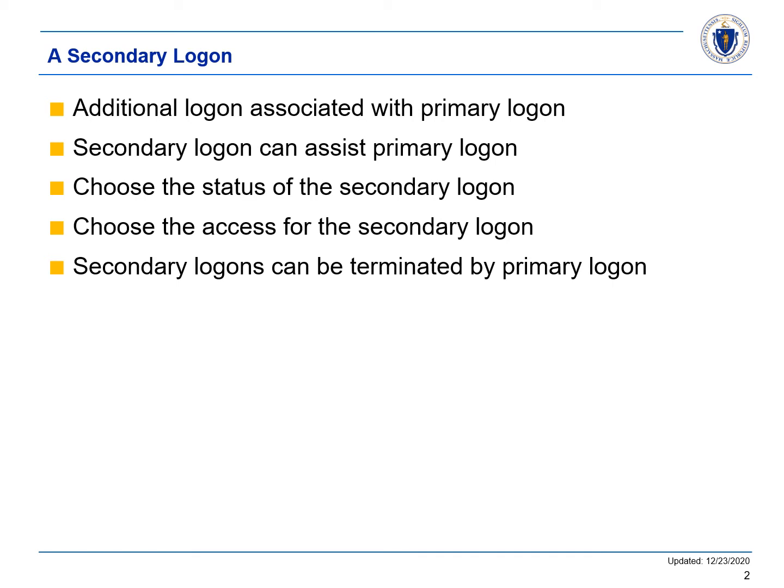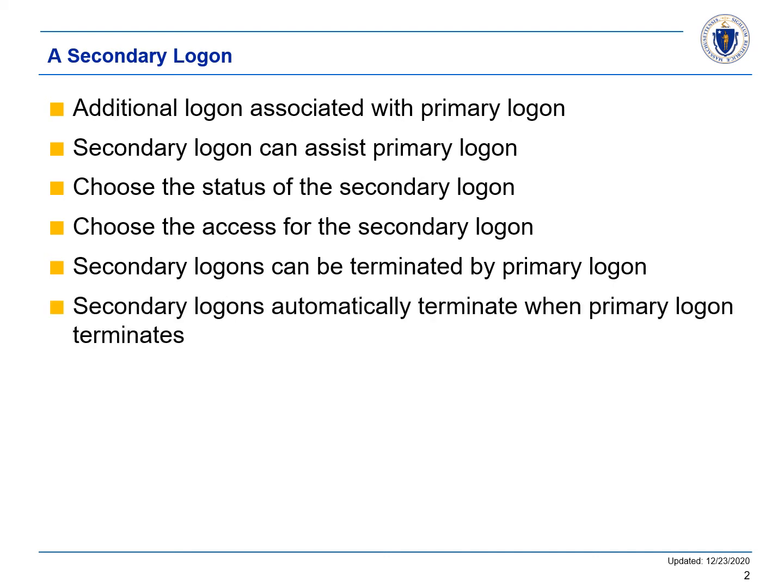These two examples illustrate how secondary logons can be useful to help manage workload and assist the primary logon when needed. They may only have access to customers and accounts that you have access to, and you can manage their access for all customers and accounts. They will lose access to customers and accounts that you lose access to, and will have their logons canceled when your logon is canceled.